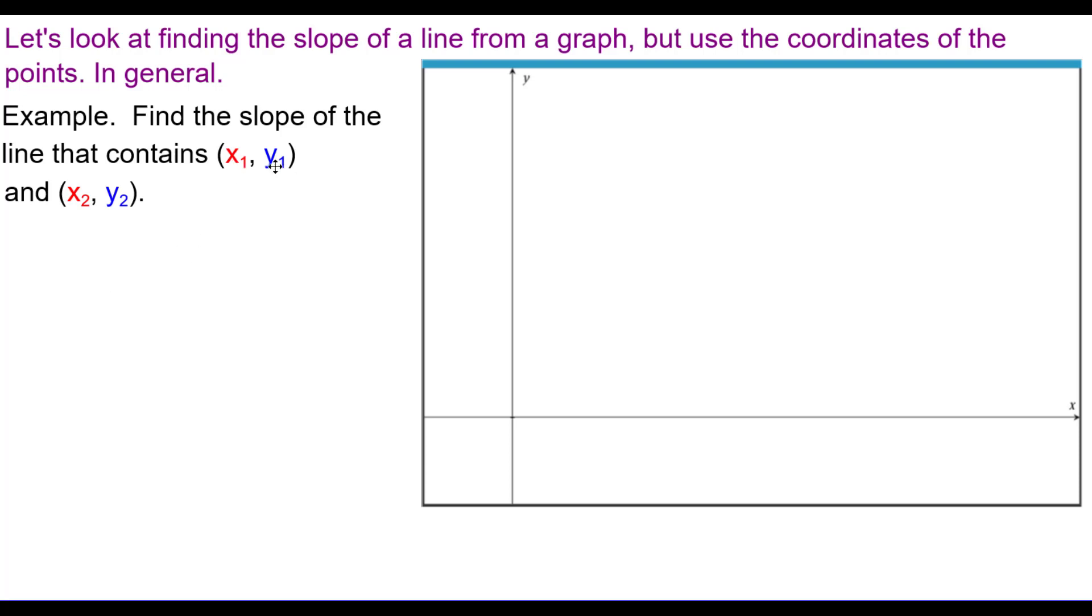So, we're going to use x sub 1 comma y sub 1 for the first point and x sub 2 comma y sub 2 for the second point. And we're going to follow the same procedure we just did, but using variables instead of numbers.